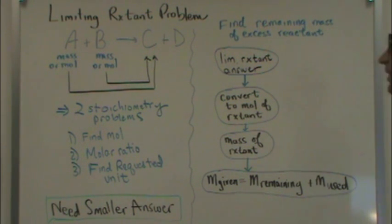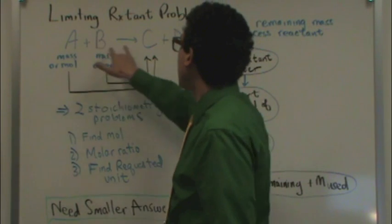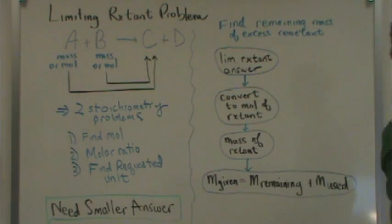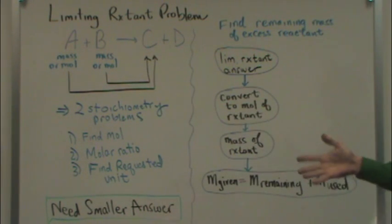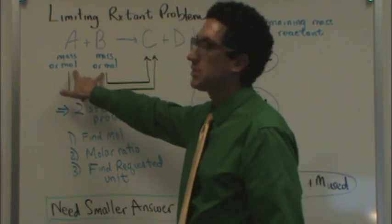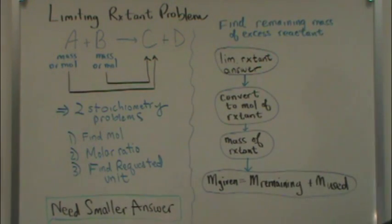Here's the basics of the limiting reactant. You have a reaction here, say A plus B goes to C plus D. However, in this case, you're asked about C, say one of the products, but you're given information like mass or moles about more than one reactant.